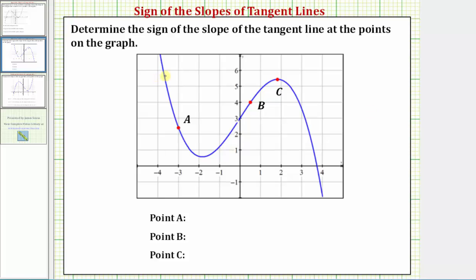In this example, we're asked to determine the sign of the slope of the tangent line at the points on the graph. Let's begin by sketching the tangent lines to the graph at points a, b, and c.